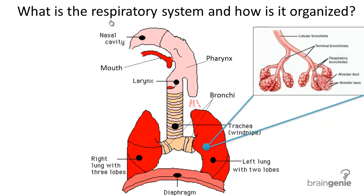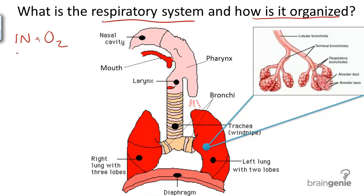What is the respiratory system and how is it organized? The respiratory system is responsible for breathing. Respiration means taking in oxygen to your cells through the lungs and breathing out carbon dioxide.